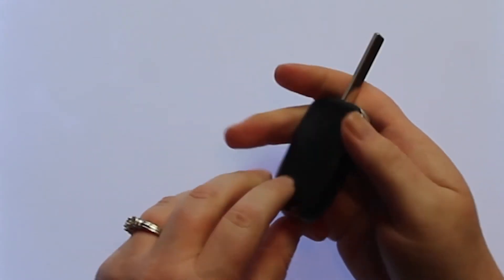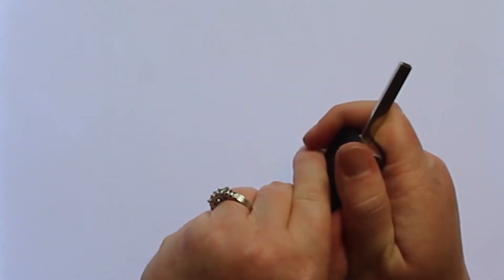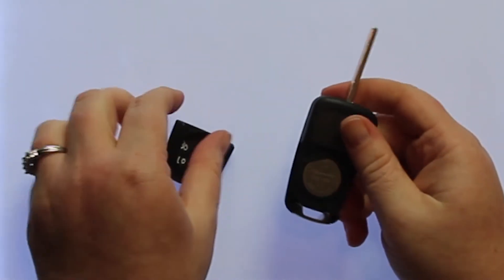To open this key fob, your first step will be to push the button. Once you have the button pushed, you can take your thumb and just pop the backside off.